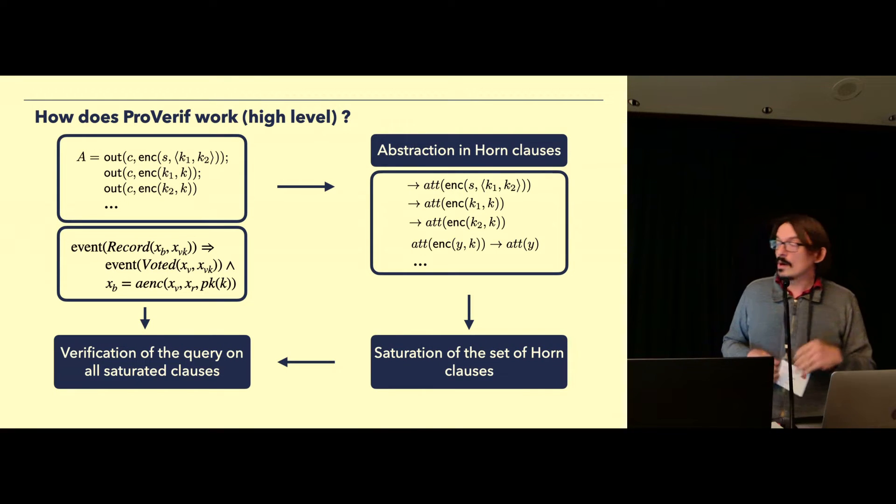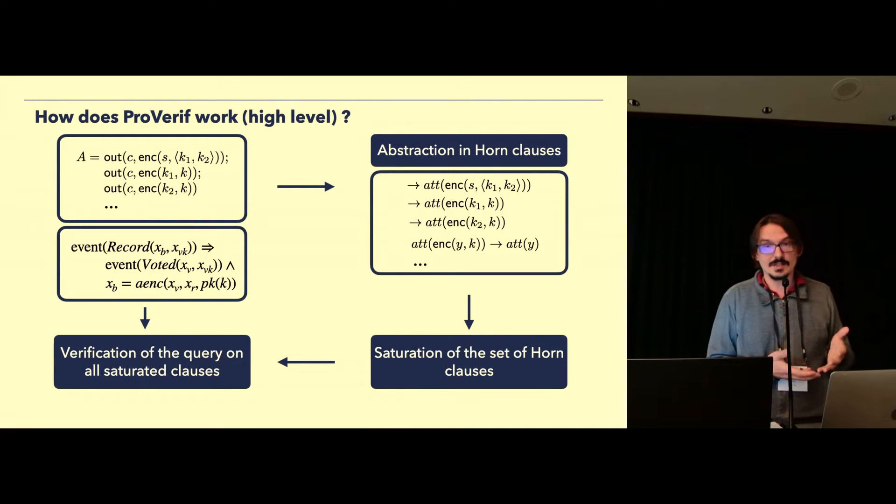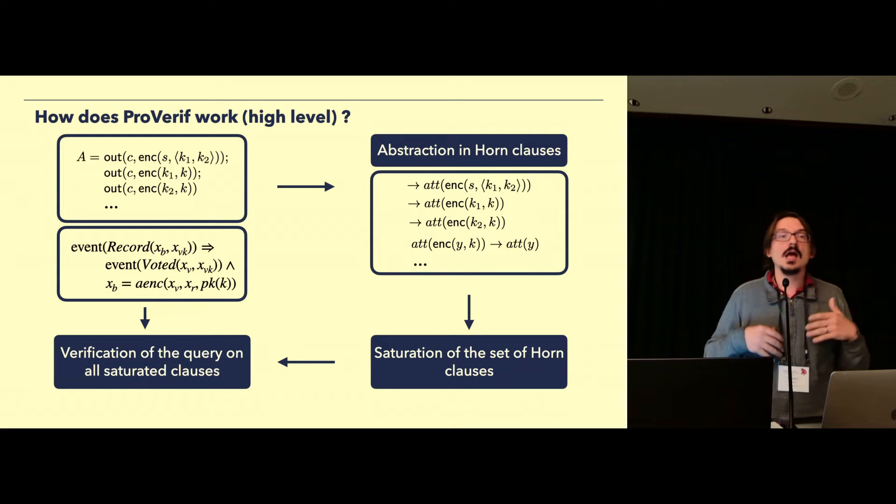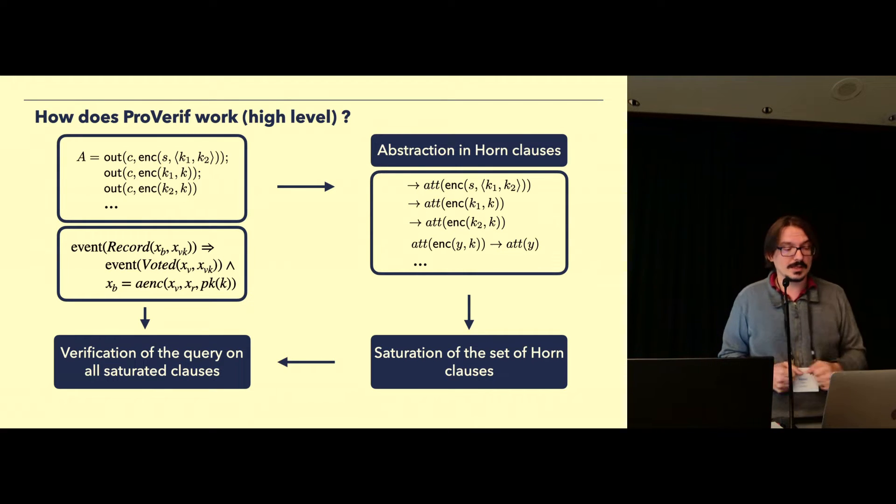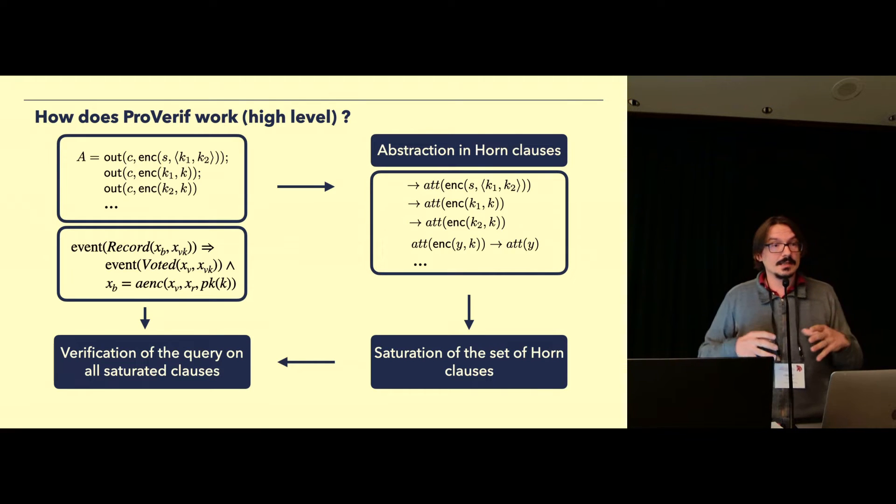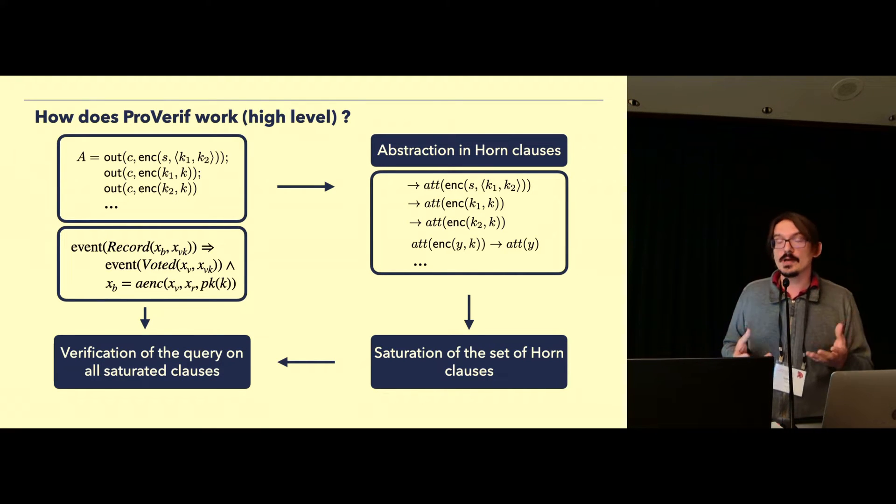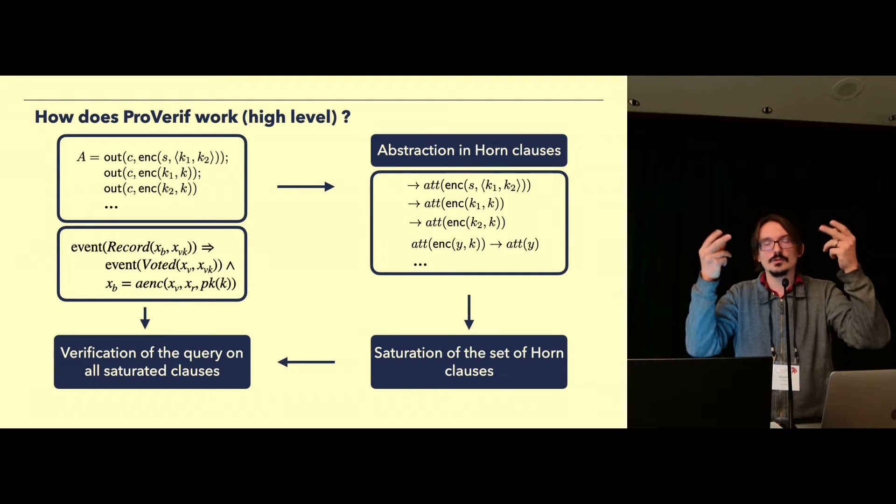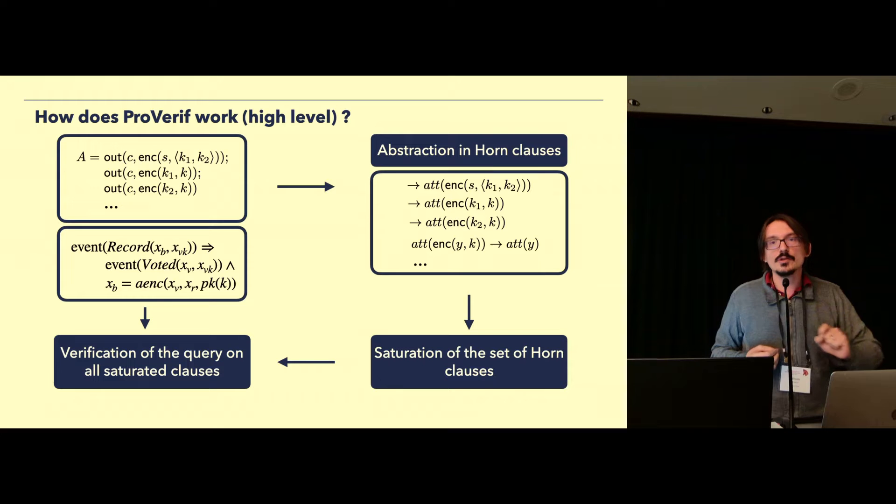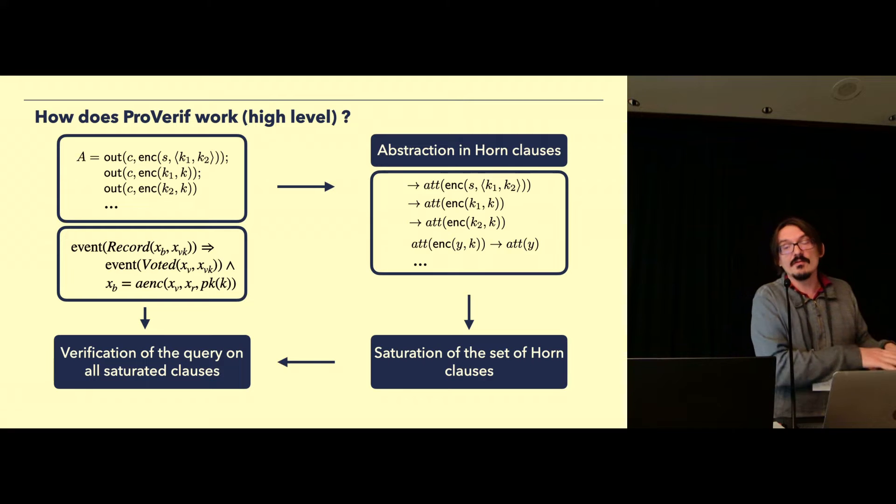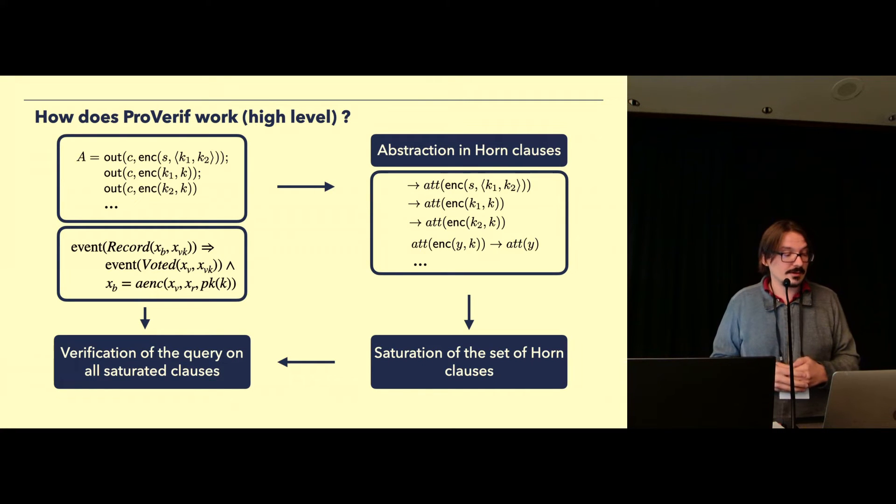So how does it work internally? ProVerif takes the process you gave as input as well as the queries, and it translates that into a set of Horn clauses. Horn clauses are typically a logical statement that says if my hypothesis holds, then my conclusion necessarily is true. Then after you translated this protocol into a set of Horn clauses, it applies saturation, which corresponds to taking two Horn clauses from your current set of clauses, combining them through resolution, and then adding this newly generated clause into the set. You repeat this process until a fixed point is reached, and once your fixed point is reached, this is the saturated set. And then ProVerif verifies the query on this set of saturated Horn clauses.